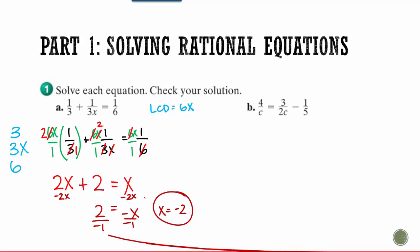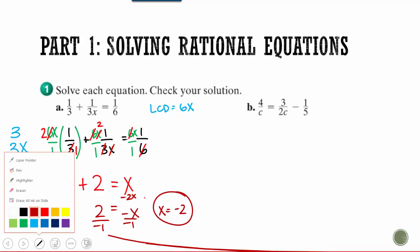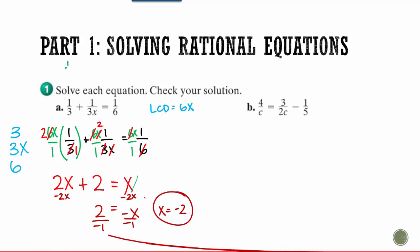Now the awesome thing about these is you can check your answer. Remember anytime we solve something you can check your answer. So plug it back in. Does 1 third plus 1 over 3 times negative 2, does that equal 1 sixth? And if you don't want to try to figure it out by memory, you can always just type it into your calculator and those will work out.